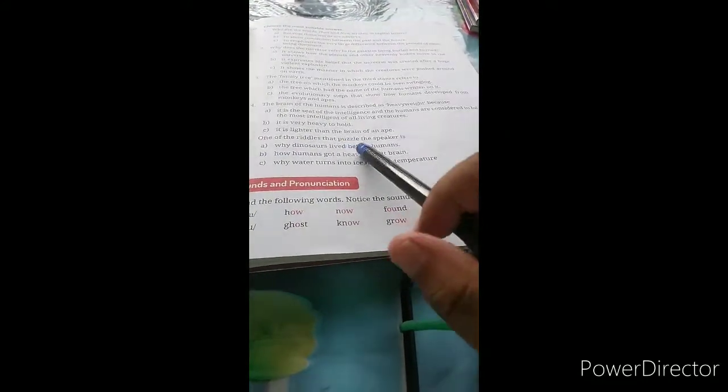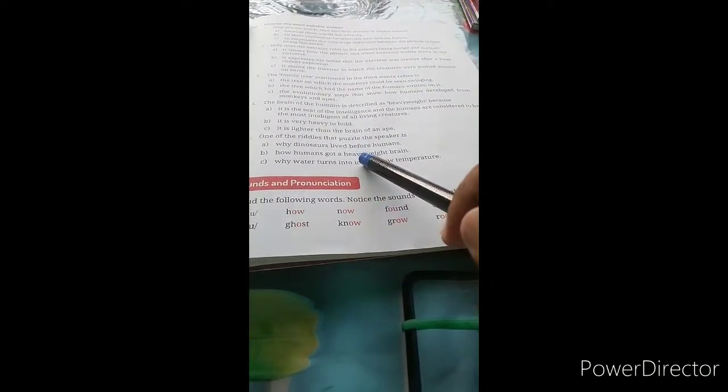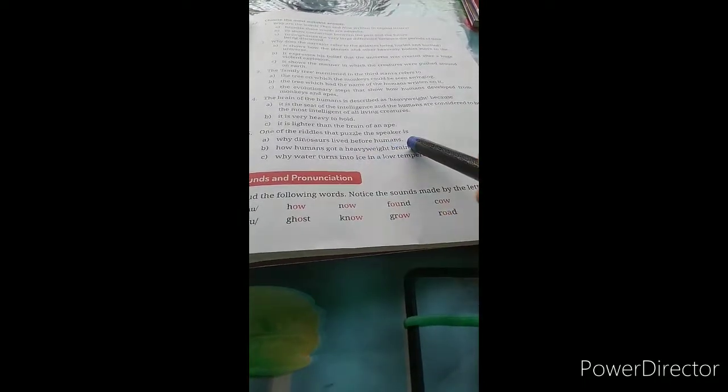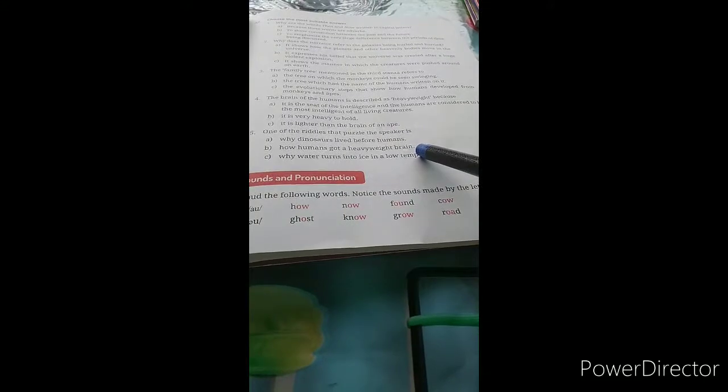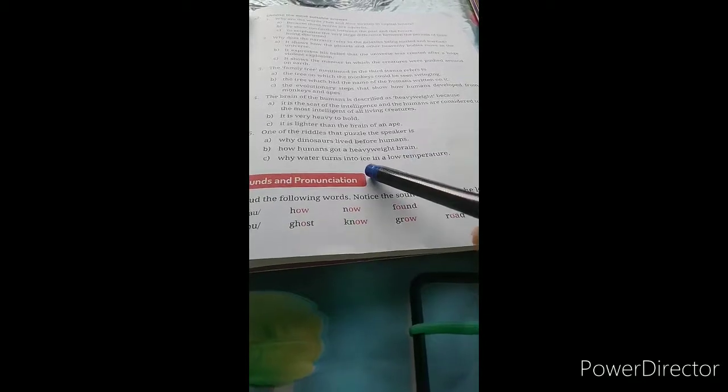Question five: One of the riddles that puzzle the speaker is: A - why dinosaurs lived before humans, B - how humans got a heavyweight brain, C - why water turns into ice in low temperature. Option C seems most suitable.